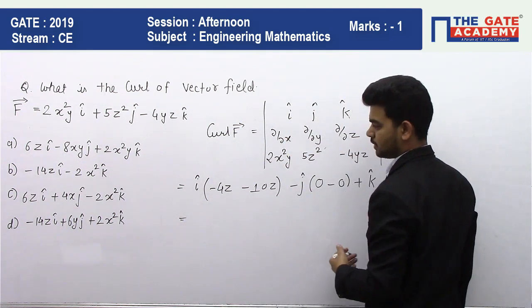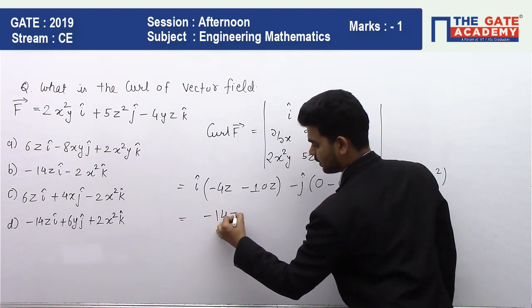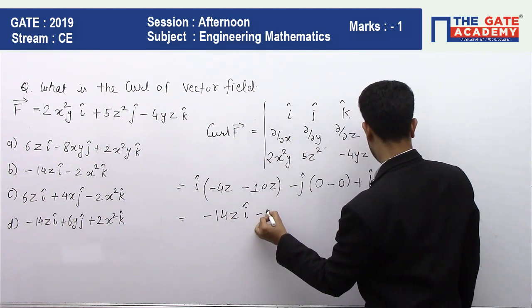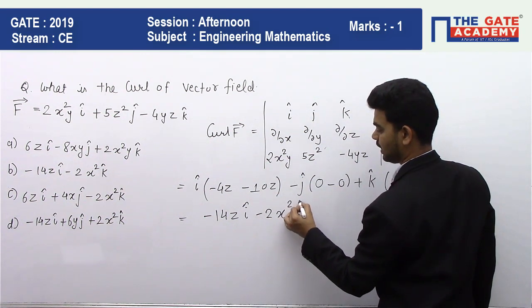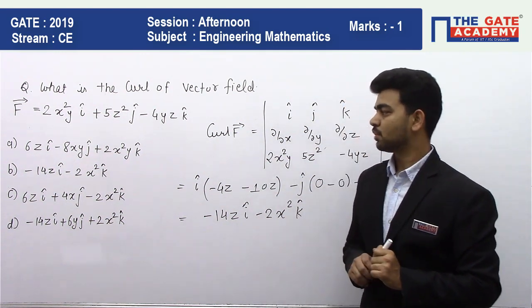-14z i - 2x² k is our curl of this vector field, so correct option we can say is b.